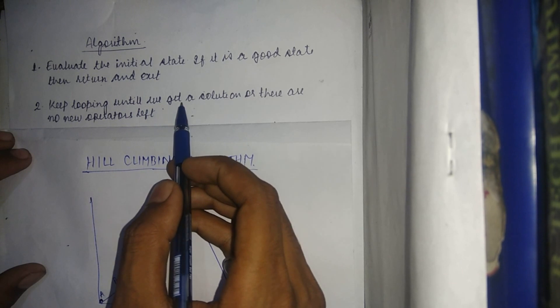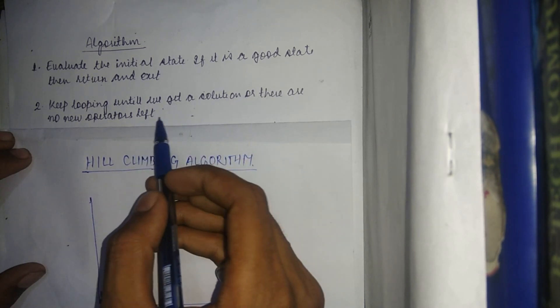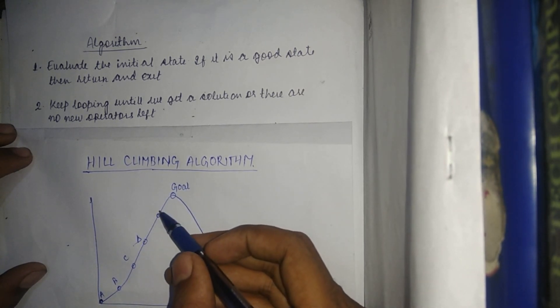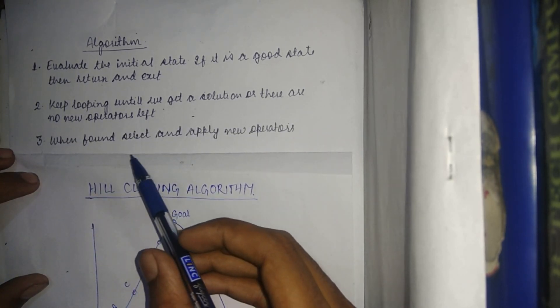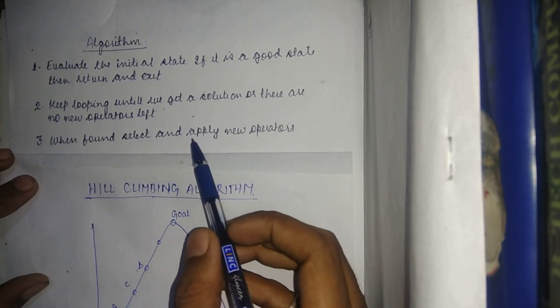Step two: keep looping until we get a solution or there are no new operators left. We continue the loop until we reach the goal state. For example, at point C we may have to move to point D to reach the goal state. Step three: when found, select and apply new operators. These operators are applied at the new points and we move towards the goal state.